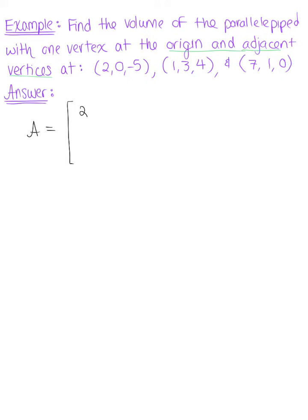So our first column vector will be 2, 0, negative 5. Our second column vector is 1, 3, 4. And our third column vector is 7, 1, 0.